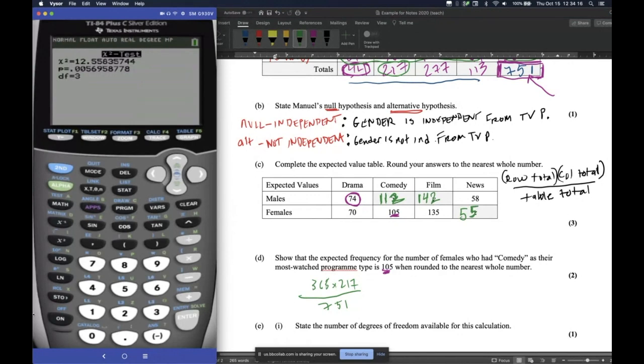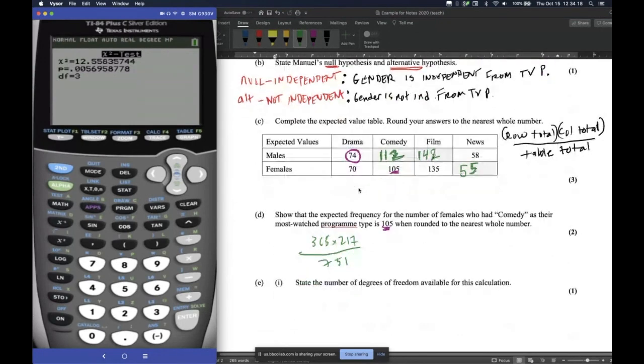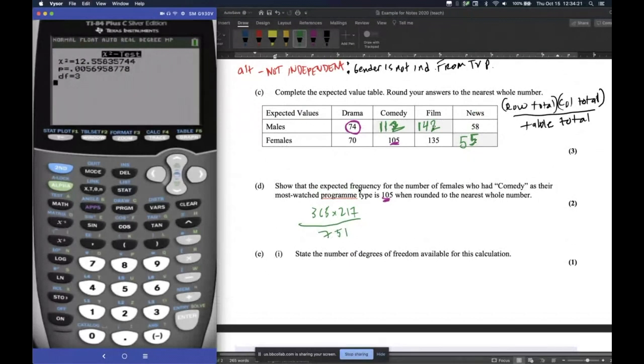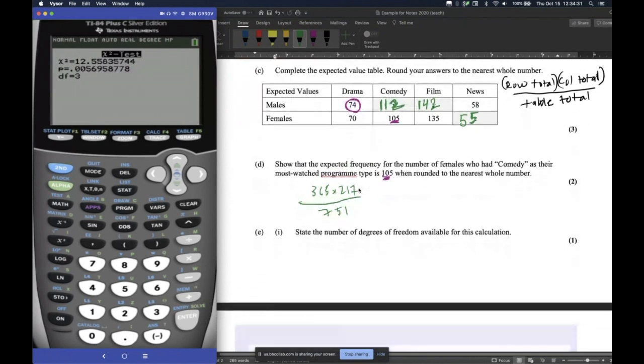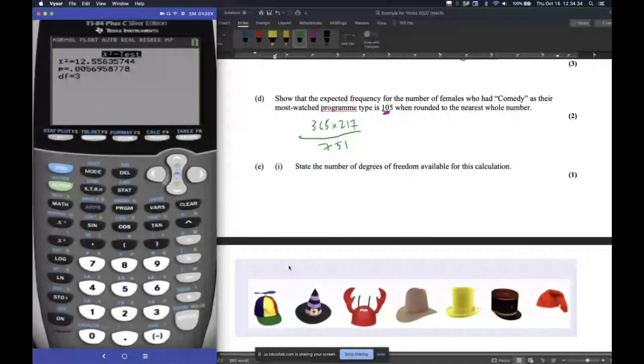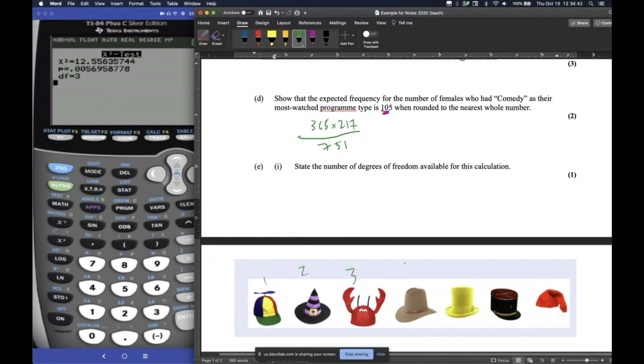So now we go down to part E. It says state the number of degrees of freedom. What they mean is your choice. What is your freedom of choice here? And the best way to explain it to you is I have an example right here. I have a bunch of hats, a bunch of awesome hats. So I have one, two, three, four, five, six, seven hats. Seven beautiful hats. The degrees of freedom. What are my degrees of freedom of picking these hats?